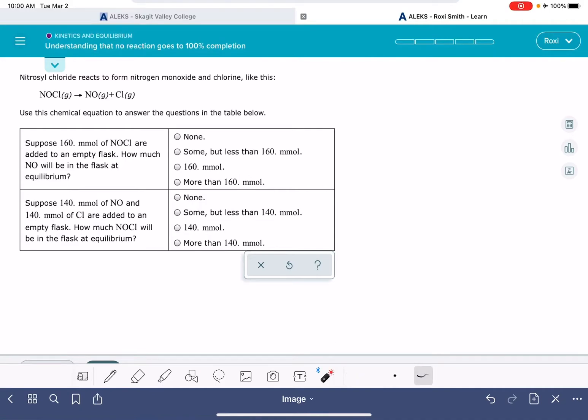In this video, I'll show you how to solve the Alex problem called understanding that no reaction goes to 100% completion. In this problem, you'll be given a chemical equation, and then you'll be asked two separate, unrelated questions about that chemical equation. Before we get started, I want to point out a unit that's being used in this problem that you might not be familiar with, the millimole.